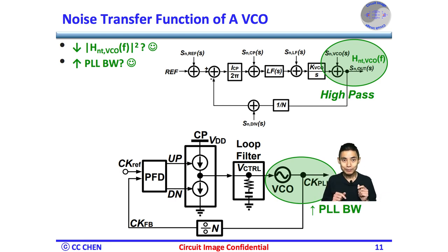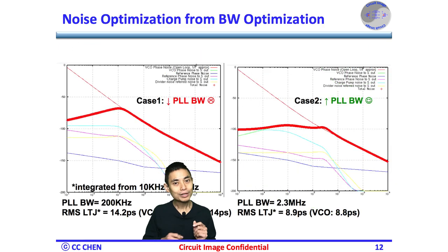Let's think about the PLL bandwidth optimization for 5 seconds. Bingo! The phase noise or jitter optimization can be performed from the PLL's loop bandwidth optimization efficiently.